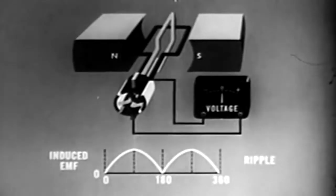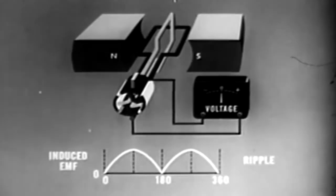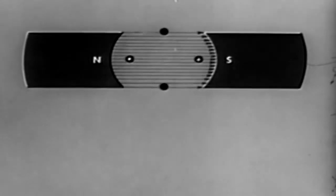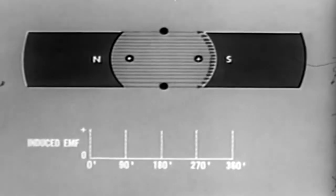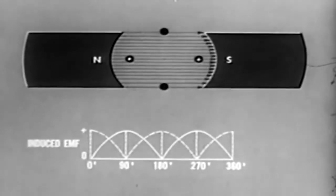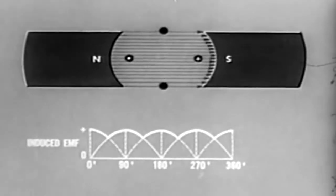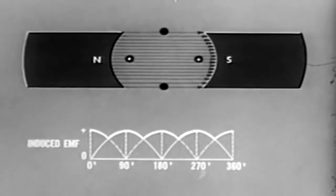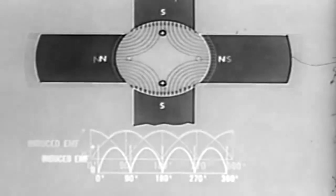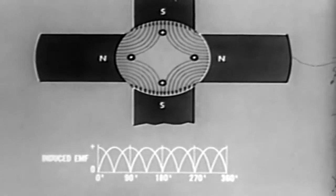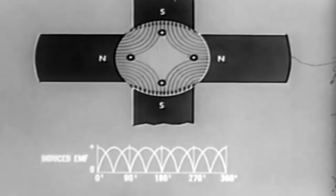Two loops at right angles connected to four commutator segments provide two outputs instead of one. These outputs are 90 degrees displaced, which combine to smooth the DC output. However, even with two loops and four commutator segments, the rectified curve is still somewhat irregular. By adding magnets, we increase the number of fields cut by the armature. As we increase the number of loops and commutator segments, the variation between maximum and minimum value decreases.